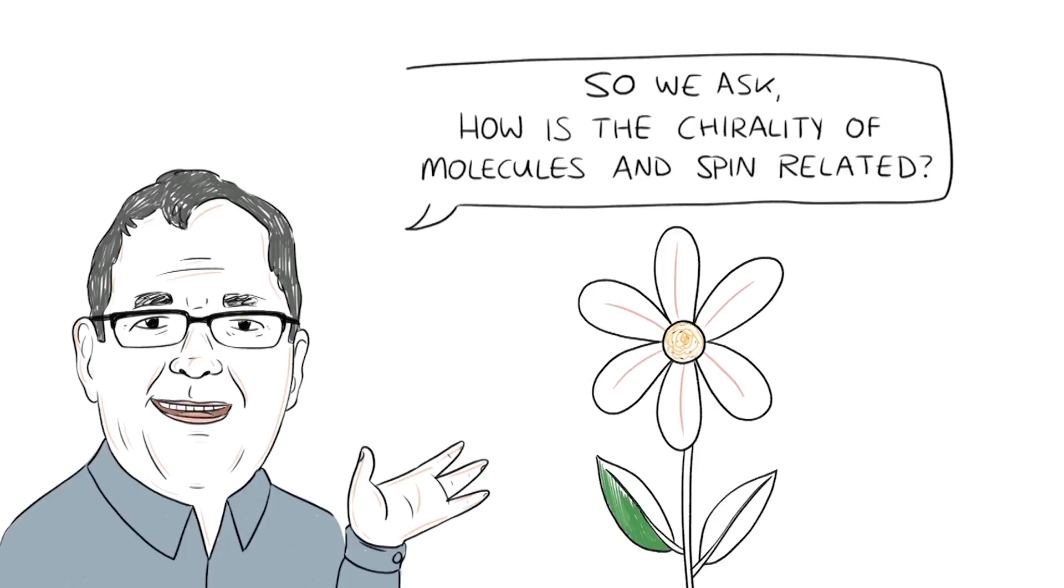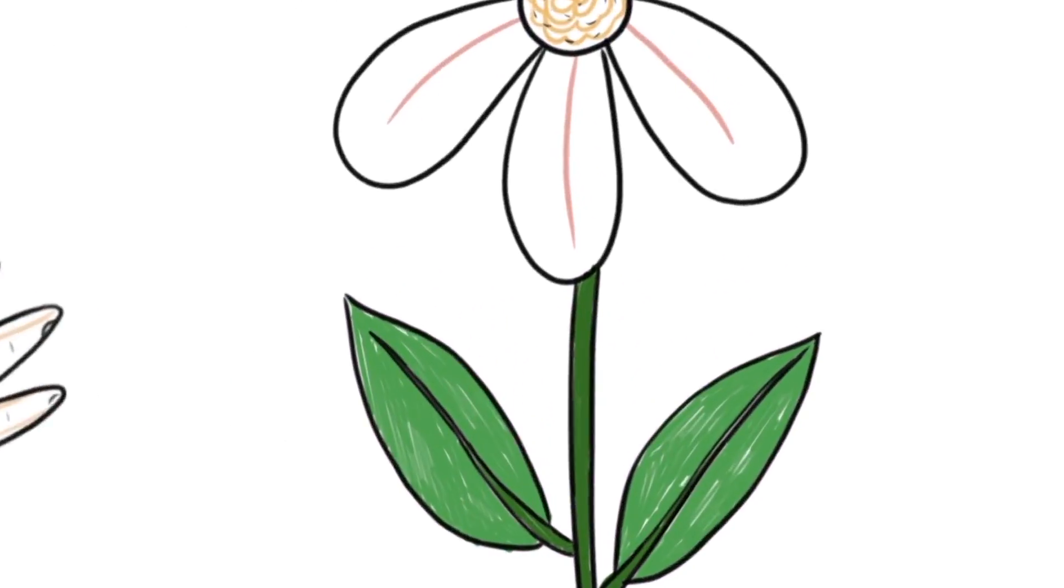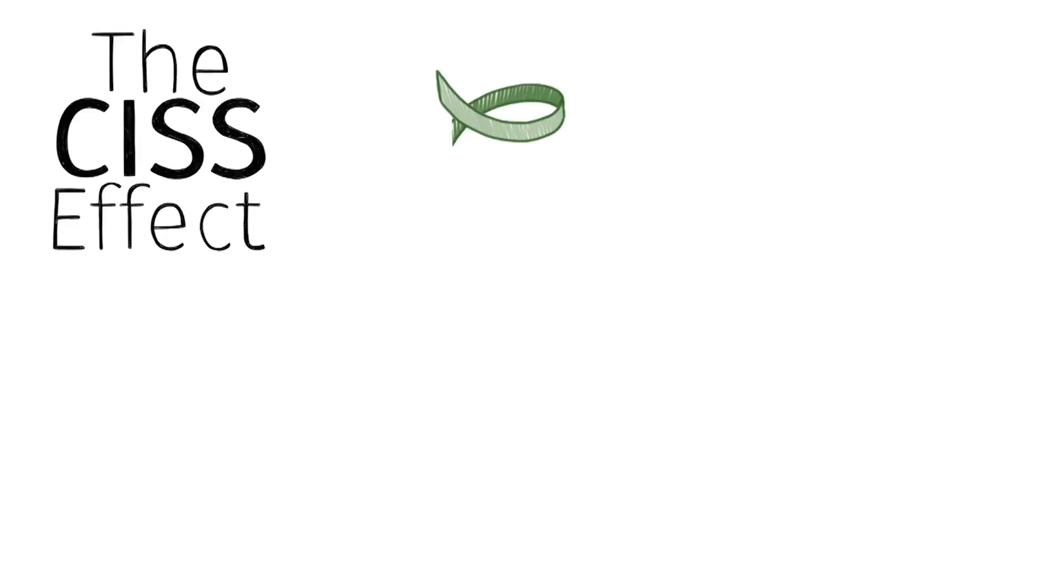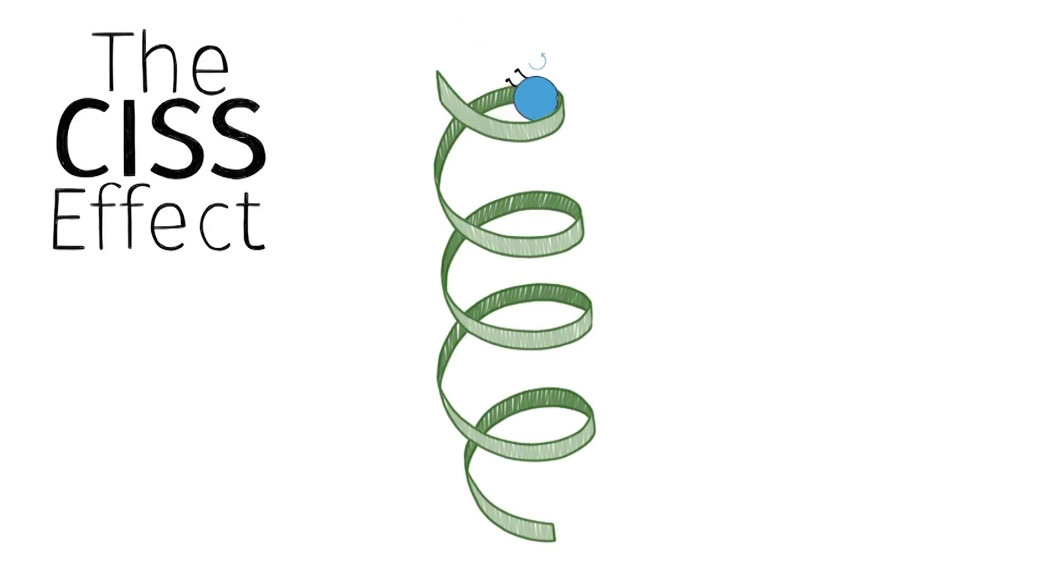So, how are chirality of molecules and spin related? Here we will introduce the CISS effect. When electrons are moving through the chiral system, they feel as if there is a magnetic field acting on them.